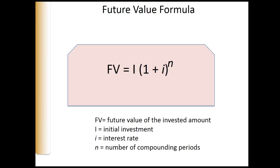To calculate future value, we can use a mathematical formula, time value of money tables, a calculator, or a computer spreadsheet — we'll view all four methods. The formula to determine future value is: future value equals the initial investment times (1 plus the interest rate) raised to the number of compounding periods.